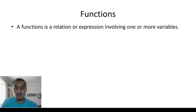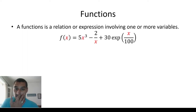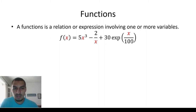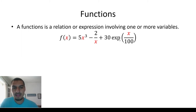For instance, let's look at this equation: f(x) = 5x³ − 2/x + 30·e^(x/100). What I have highlighted in red is x, and this x is the same x that appears throughout the function.